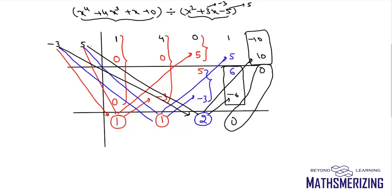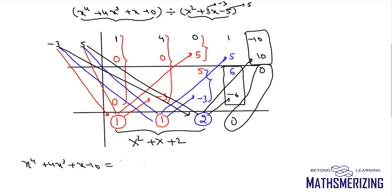The remainder is 0x + 0, so the remainder is 0, and the quotient is x² + x + 2. Therefore x⁴ + 4x³ + x − 10 equals the divisor (x² + 3x − 5) times (x² + x + 2), plus remainder 0.